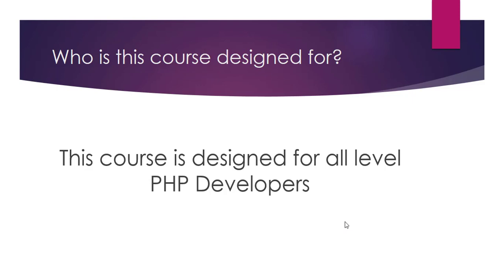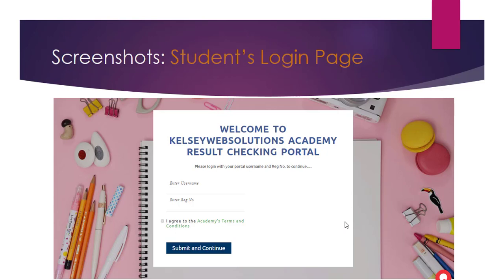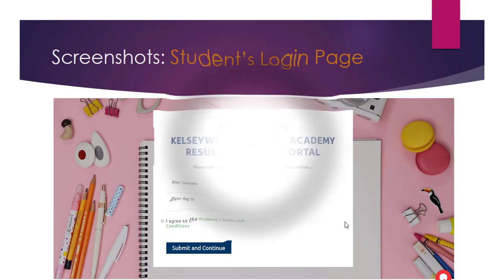Now I'm going to show you some screenshots of the different sections of the application. The first is the student login page. Students will log in with their username and registration number, accept the academy's terms and conditions, and click 'Submit and Continue.' There are also validations in place in case a student tries to log in without entering a username or enters incorrect credentials.